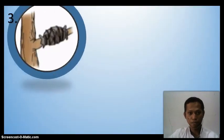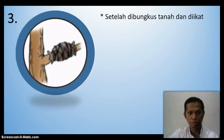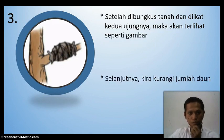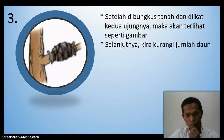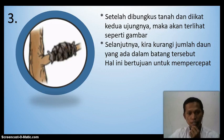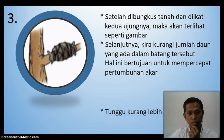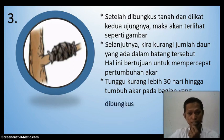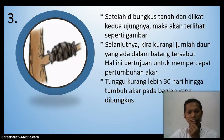Ketiga, setelah dibungkus tanah dan diikat kedua ujungnya, maka akan terlihat seperti pada gambar. Selanjutnya, kita kurangi jumlah daun yang ada pada batang tersebut. Hal ini bertujuan untuk mempercepat pertumbuhan akar. Terakhir, tunggu kurang lebih 30 hari hingga tumbuh akar pada bagian yang dibungkus. Begitulah langkah-langkah mencangkok.